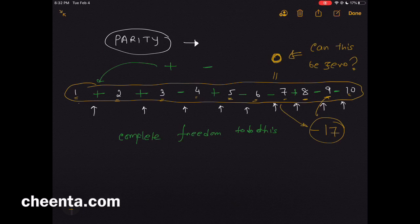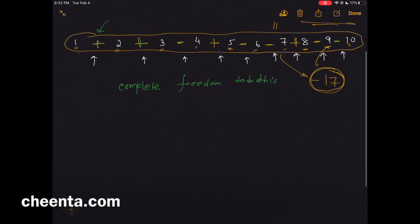After you have computed the value of this thing, it becomes negative 17. The question is, can this ever become zero? Because there are several ways of putting these plus and minuses in between, and maybe at some point this becomes zero.